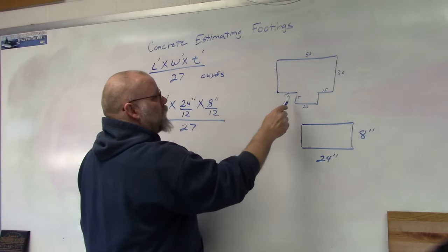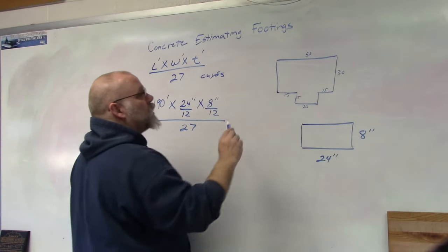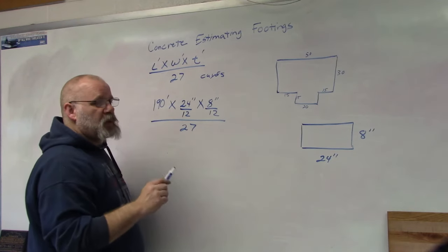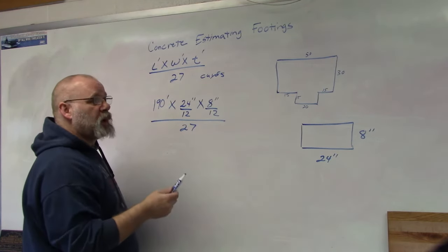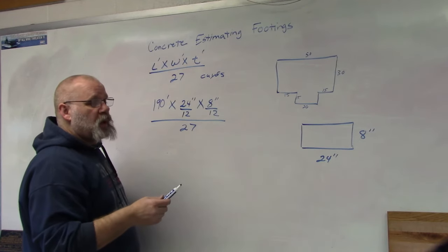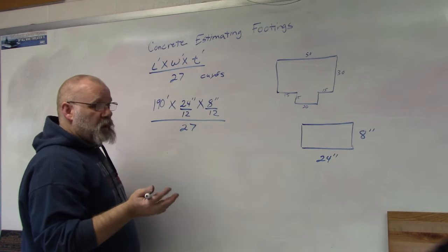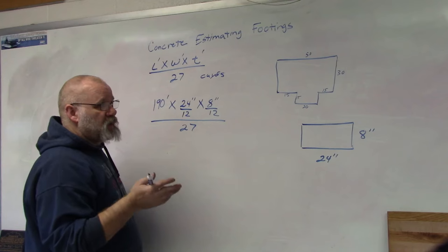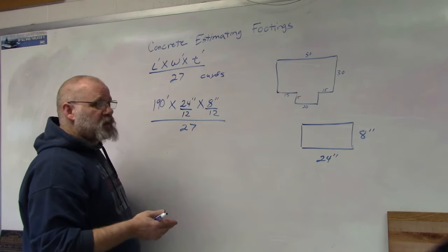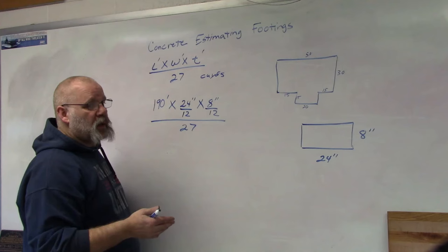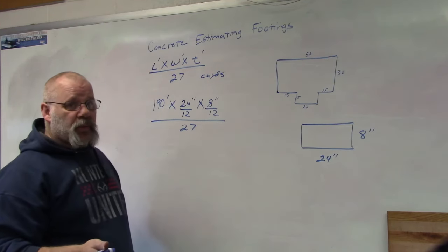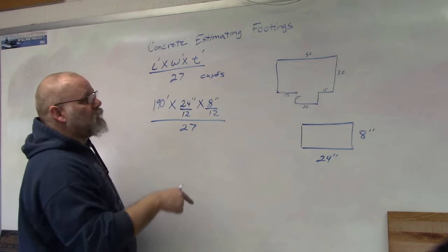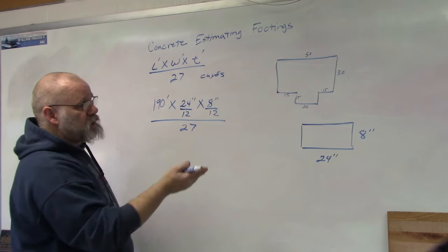Now here's one thing you need to remember: if you have a house, sometimes the footings aren't all the same size. So if you're building a house, you have to look at the footings on the footing and foundation plan to see if the footings are all the same size. If they're not, then you have to count the linear feet of each type of footing and you might have to do multiple calculations. But for this one, I'm only going to do one size fits all.